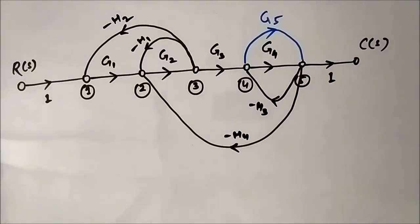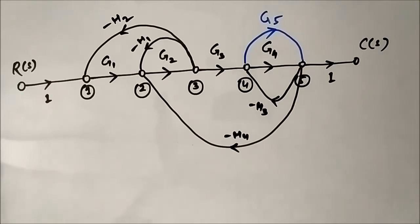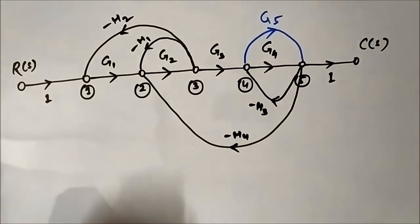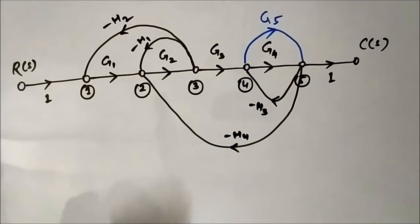Now we will discuss the concept of touching and non-touching loops. We are discussing this because it is involved in the Mason-Gayne formula for the determination of the transfer function.